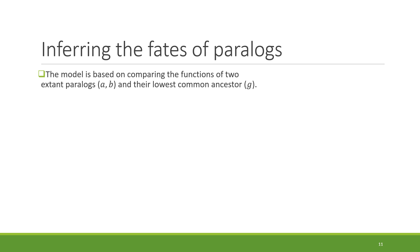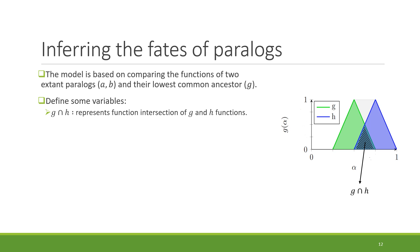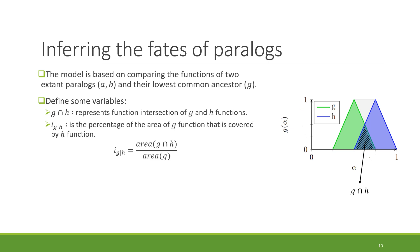To infer the fate of paralogs, our model is based on comparing the functions of paralogous genes A and B with their lowest common ancestor. We define variables where g and h are two different genes: g intersect h represents the intersection between g and h functions; i(g, h) represents the percentage area of g that is covered by h; and g plus h represents the function addition of g and h.